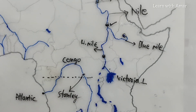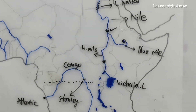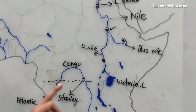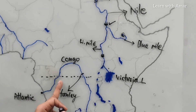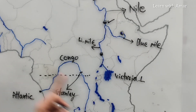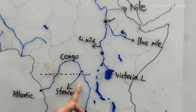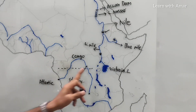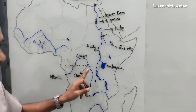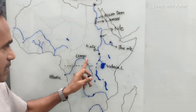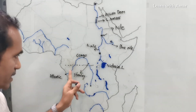Now let us move on to what is special about the Congo River. This is the only river which crosses the equator twice — here one time, here a second time.